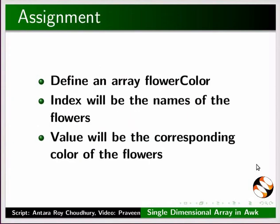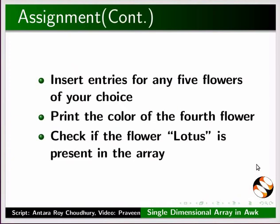As an assignment, define an array flower_color. Index will be the names of the flowers, value will be the corresponding color of the flowers. Insert entries for any five flowers of your choice. Print the color of the fourth flower. Check if the flower lotus is present in the array.